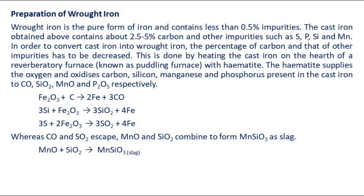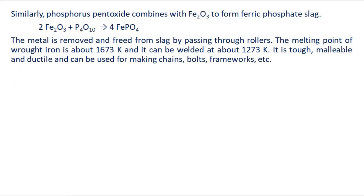Preparation of wrought iron: Wrought iron is the pure form of iron and contains less than 0.5% impurities. The cast iron obtained contains about 2.5% to 5% carbon and other impurities such as sulfur, phosphorus, silicon and manganese. In order to convert cast iron into wrought iron, the percentage of carbon and other impurities has to be decreased. This is done by heating the cast iron on the hearth of a reverberatory furnace, known as a puddling furnace, with hematite. The hematite supplies oxygen and oxidizes carbon, silicon, manganese, and phosphorus to carbon monoxide, silicon dioxide, manganese oxide and phosphorus pentoxide respectively. Whereas carbon monoxide and sulfur dioxide escape, manganese oxide and silicon dioxide combine to form manganous silicate as slag. Similarly, phosphorus pentoxide combines with ferric oxide to form ferric phosphate slag. The metal is removed and freed from slag by passing through rollers.